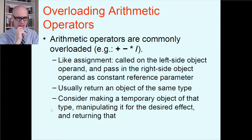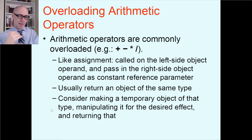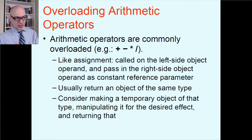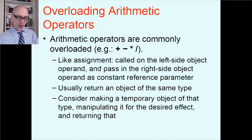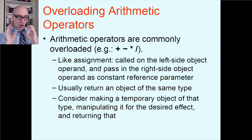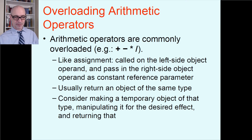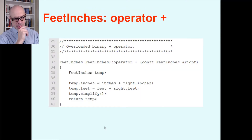Usually arithmetic operators return an object of the same type. The best strategy is to make a temporary object of the same type inside your function, manipulate it to the desired effect, and then return it. When you add two operands, you don't want to change the original objects — if I write a = 1 + 2, adding one and two does not change either operand; it produces a new number and stores it.